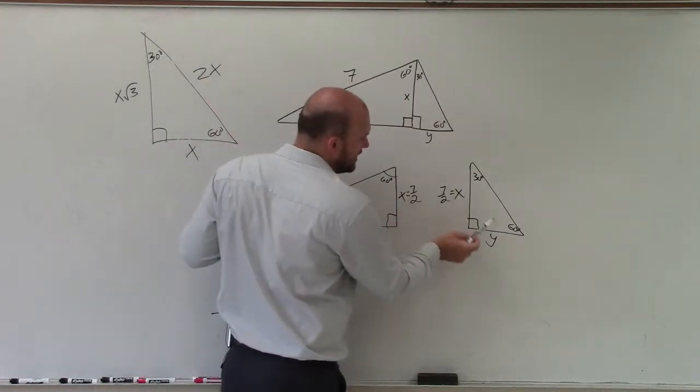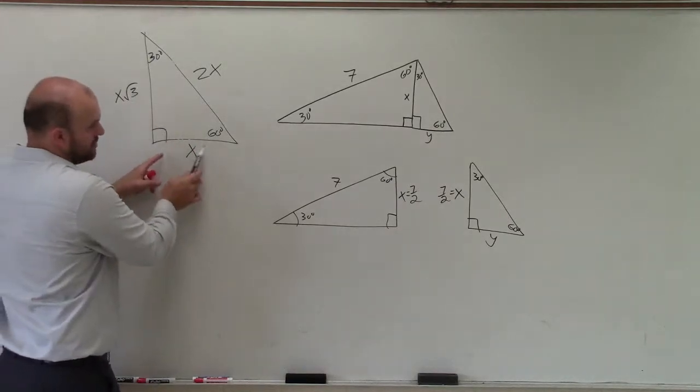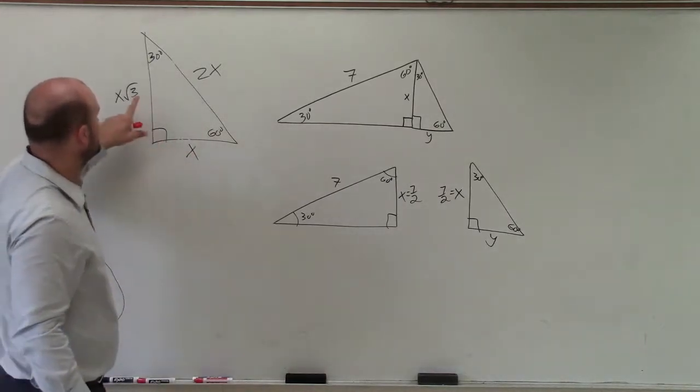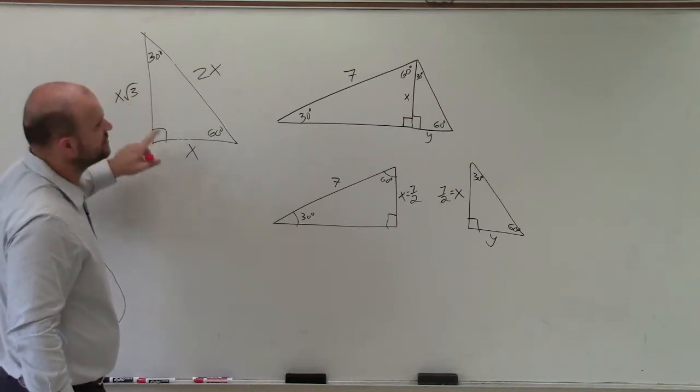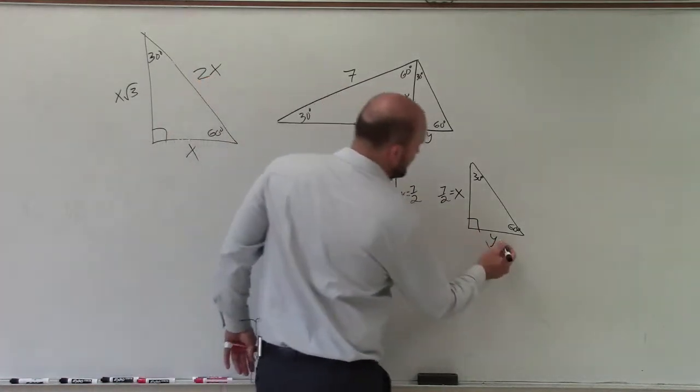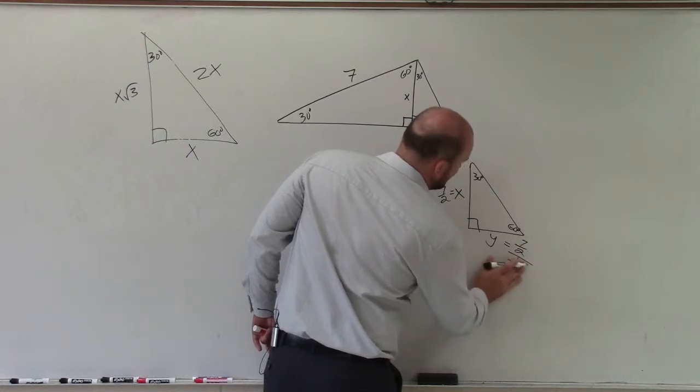Now, here, I have this is the long leg, and that is the short leg. Notice how that's the short leg, that's the long leg, right? Short leg is with the 60, between 90 and 60. So to go from the short leg to the long leg, I multiply by the square root of 3. So to go from the long leg to the short leg, I have to divide by the square root of 3. So y equals 7 halves divided by the square root of 3.